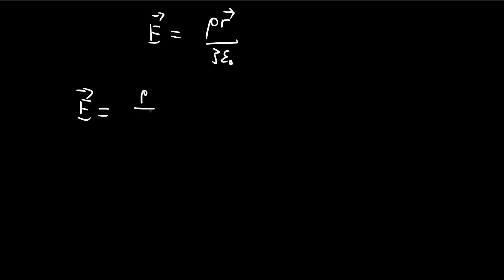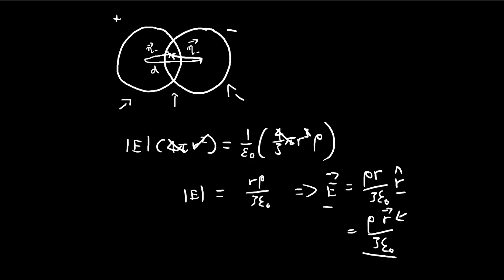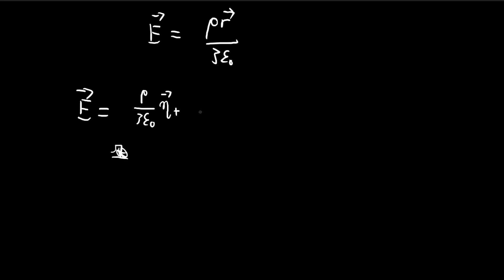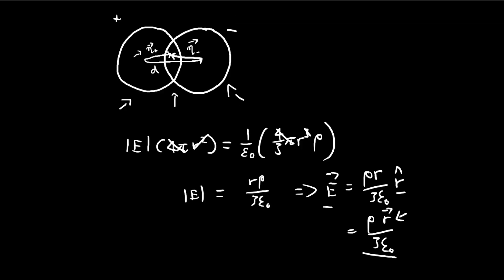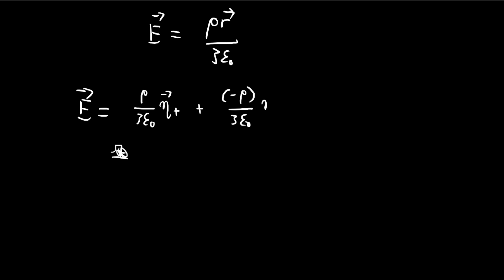So for the positive sphere it's going to be equal to this. I'm going to use a special symbol here — this is eta, a Greek symbol. I know in the book they use this weird r-like symbol, but I like using eta. So this vector over here is going to be the positive one. And then for the other side there's going to be a negative one — for the negative side the charge density is negative rho, and the vector is going to be something like this.